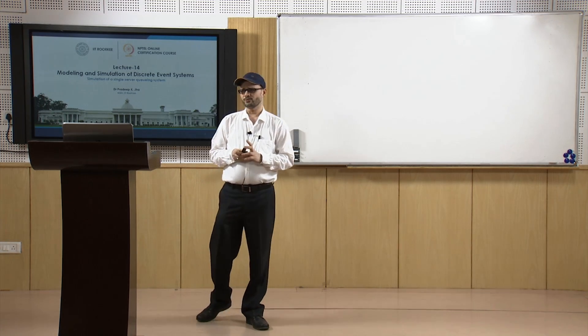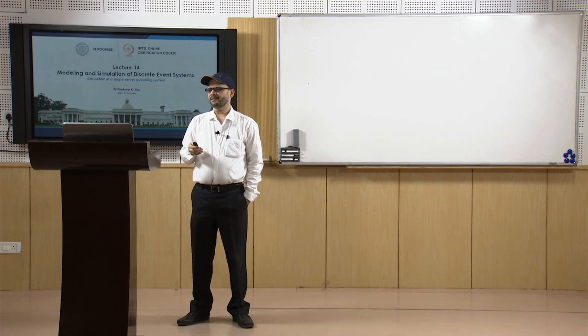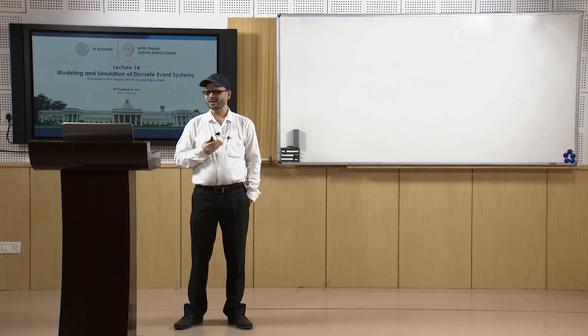The inter-arrival times are independent and identically distributed random variables, known as IIDs. These inter-arrival times are exponentially distributed, and they are Poisson distributed — or Poisson arrivals if we talk about the number of arrivals in time t and dt. Similarly, service times are also identically distributed and independent random variables, meaning they have the same probability distribution.